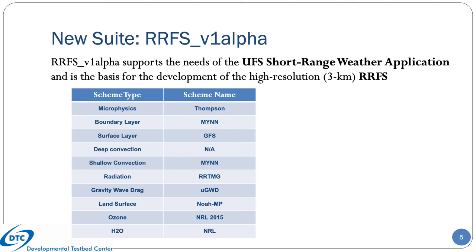Suite RFS V1-Alpha supports the needs of the Unified Forecast System short-range weather application and forms the basis for the development of the high-resolution RRFS, which employs 3-kilometer grid spacing. The RRFS suite uses the Thomson Microphysics, the MYNN PBL and shallow convection, the GFS surface layer, no deep convection, the RRTMG radiation, the Unified Gravity Wave Drag, the NOAA-MP land surface model, and the NRL ozone and water photolysis schemes.